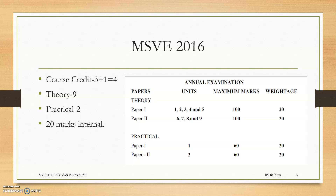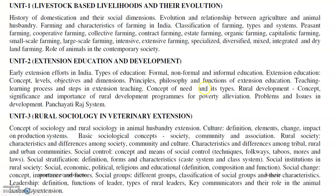The course credit is 3 plus 1, covering 9 theory topics and 9 theory units, 2 practical units, and 20 marks from the internal. This is the annual examination pattern.